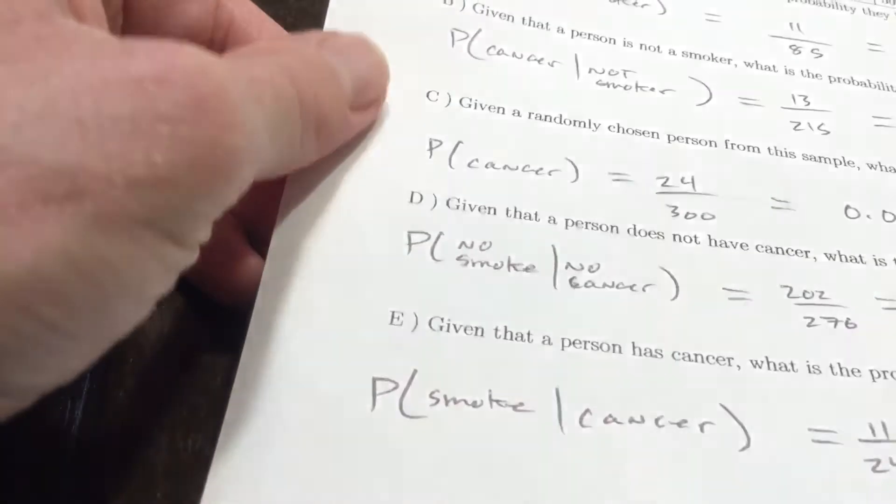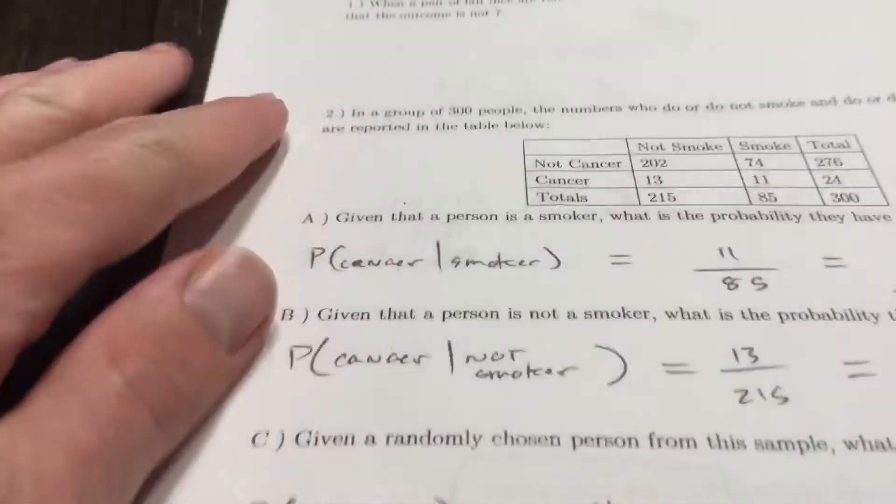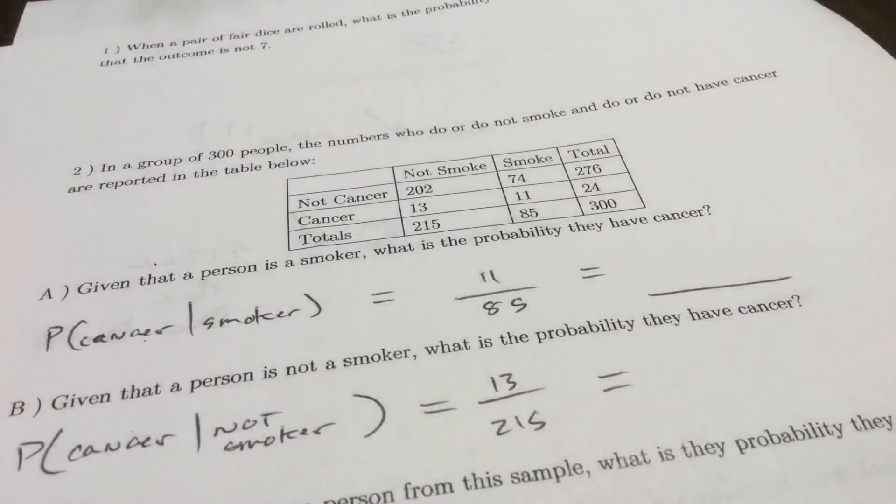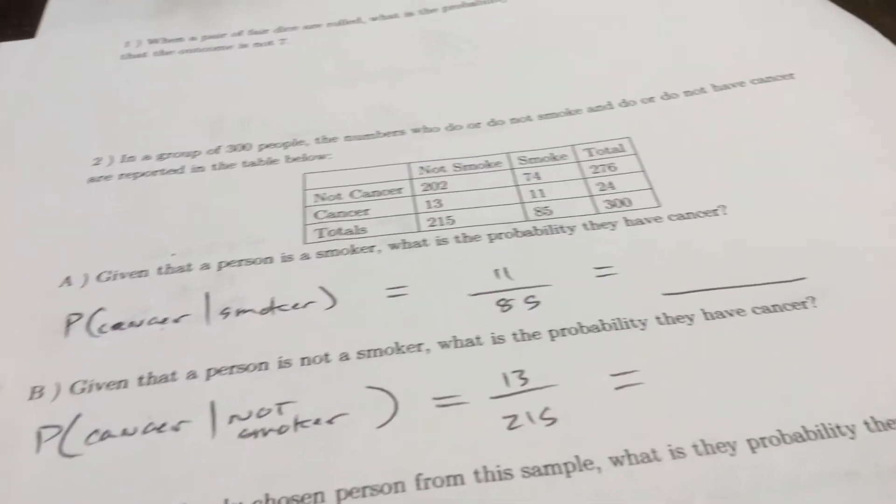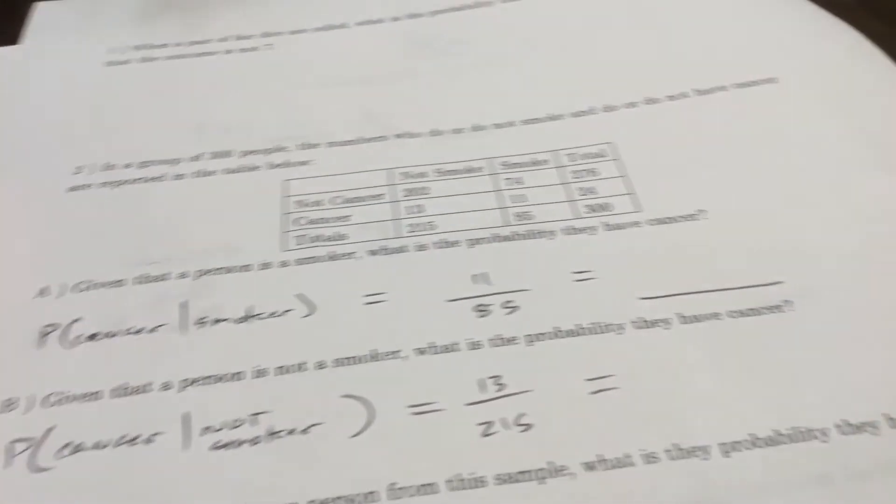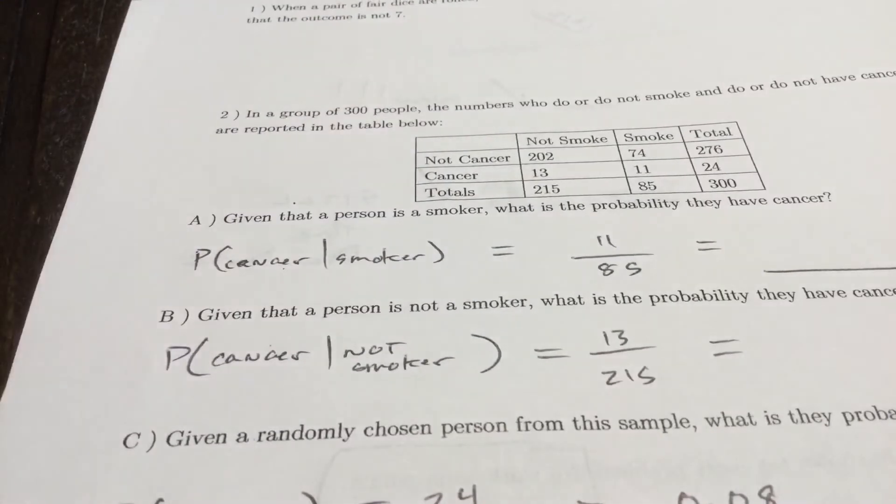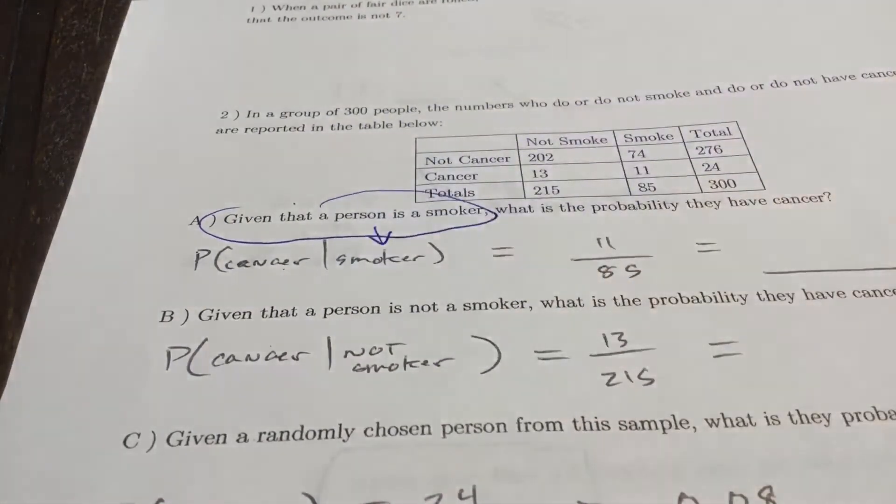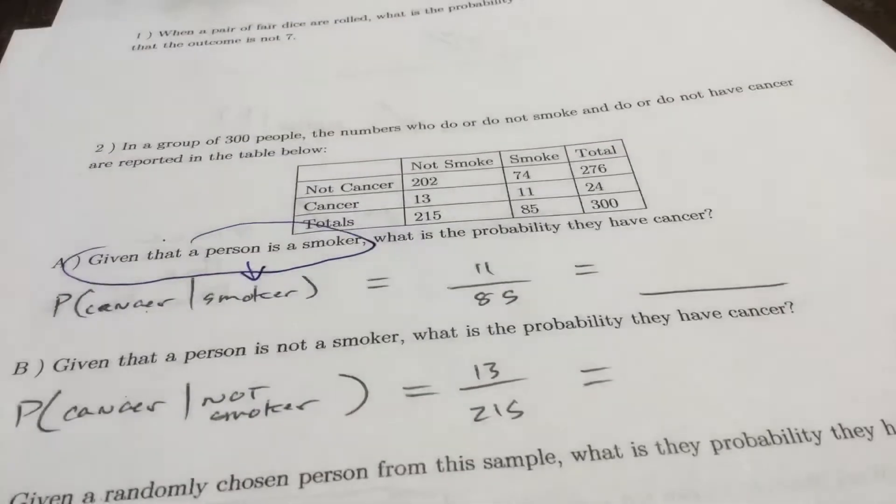I've got fewer questions than I thought. Obviously I'm going to go over these in notes later. Number two here: in a group of 300 people, the numbers who do or do not smoke and do or do not have cancer are reported in the table below. Given that a person is a smoker, what's the probability they have cancer? So I want a probability statement just like this. Write probability of cancer given that they're a smoker. Remember that given part always comes second and that is the denominator.